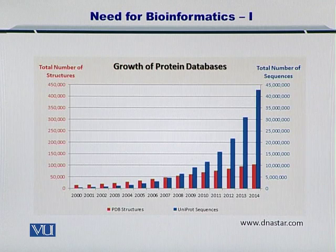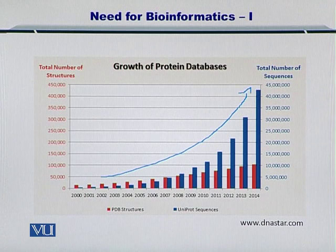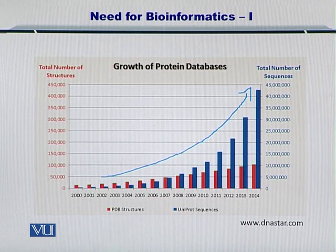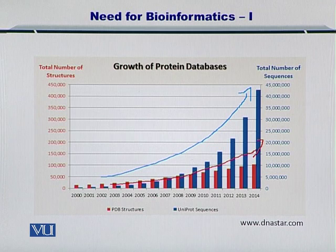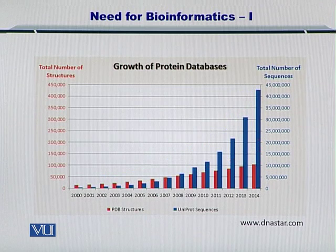Another example is the growth of protein databases. As shown in this graph, the blue bars represent the number of protein sequences — of course they are in millions — but if you look at the red bars, these are the protein structures. So both the protein sequences and the protein structures are growing at a very rapid pace. We need to utilize this data and understand how these proteins function within a cell. This is the job of a bioinformatician, and therefore we have a very nice opportunity with us.